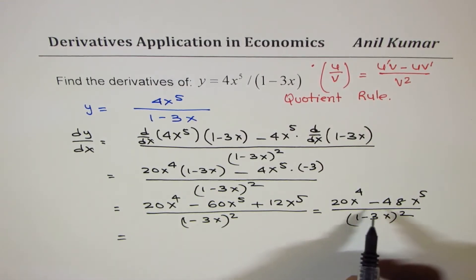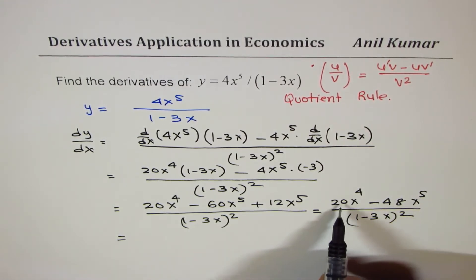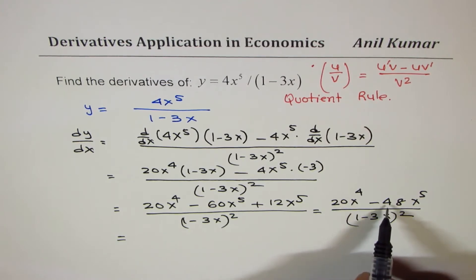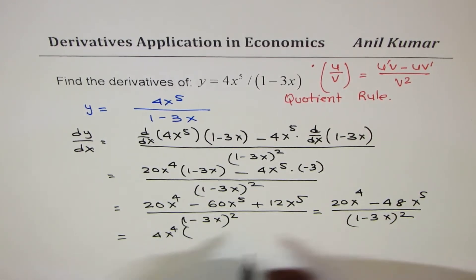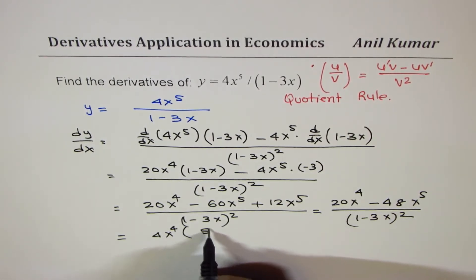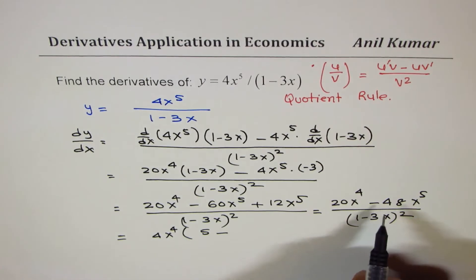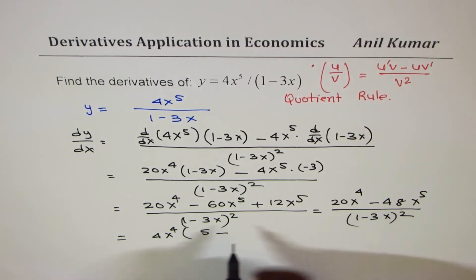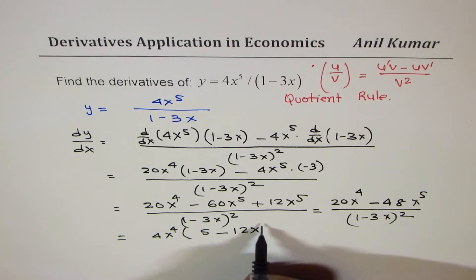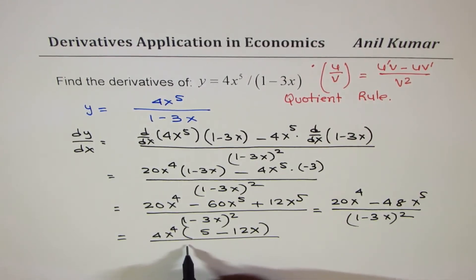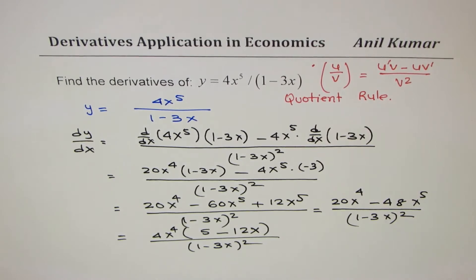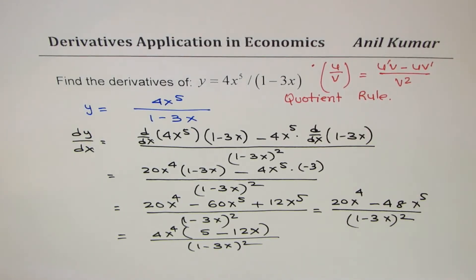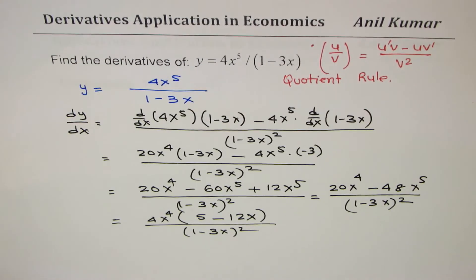Taking 4x^4 common in the numerator, we get 4x^4 times (5 minus 12x) over (1 minus 3x)^2. So that becomes the result for this derivative, and we have applied the quotient rule.